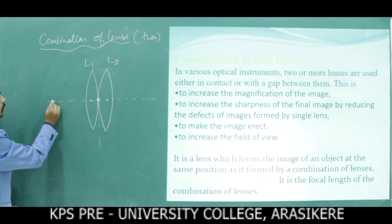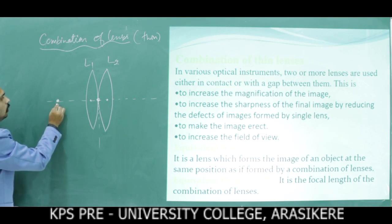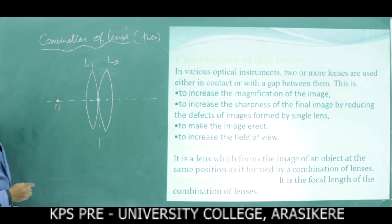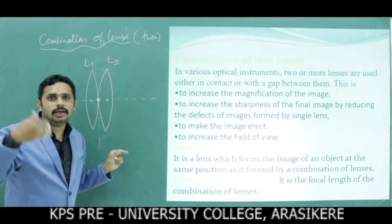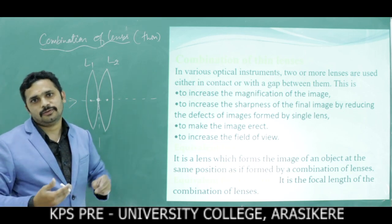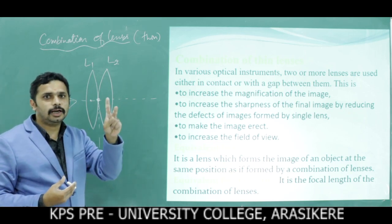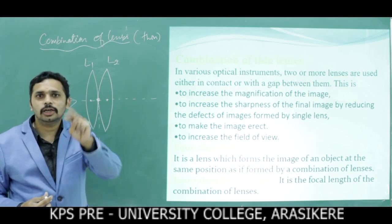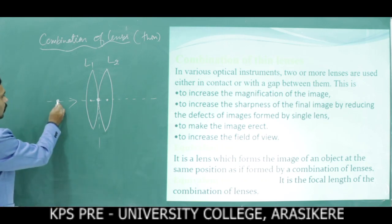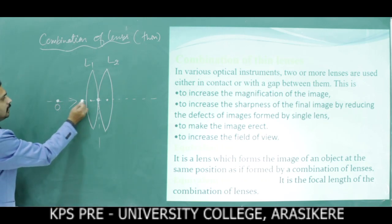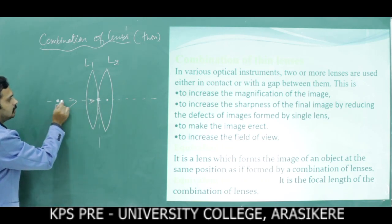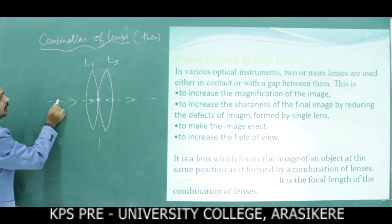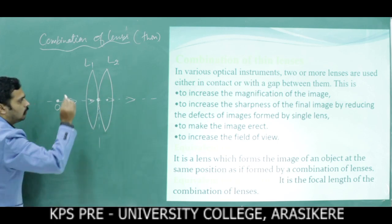Here O is the point object. From the point object you consider a number of rays of light, but to get the image I am using two to three rays of light. The ray parallel to the principal axis goes straight.